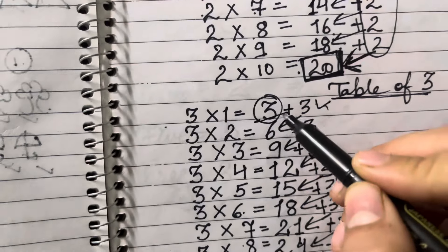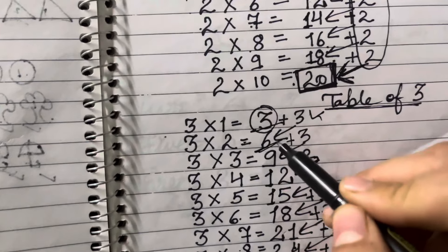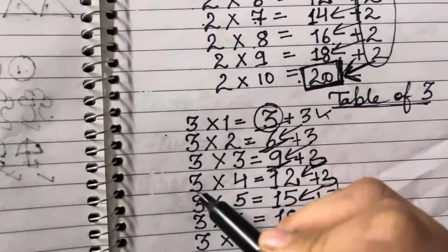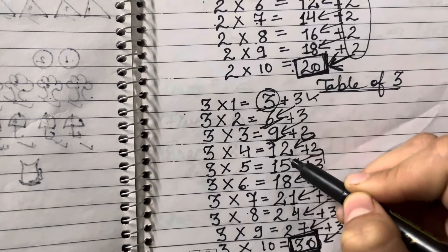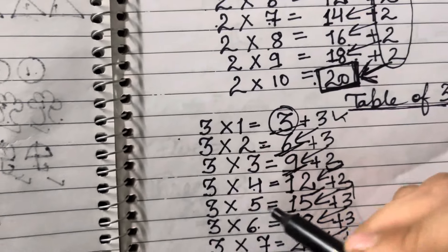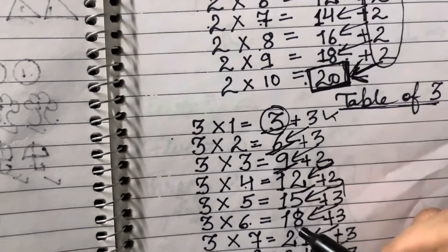3 1's are 3, 3 2's are 6, 3 3's are 9, 3 4's are 12, 3 5's are 15, 3 6's are 18.